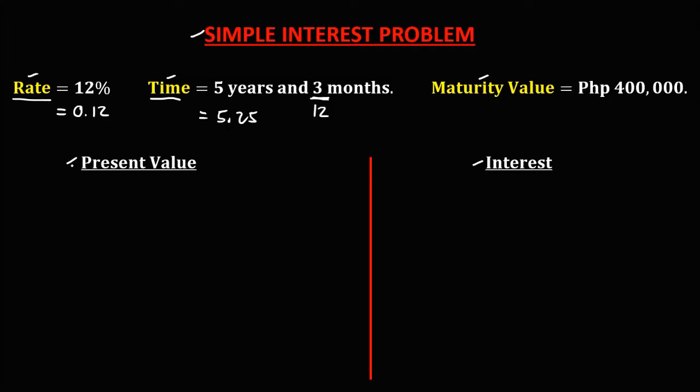Then to solve for the present value using the maturity value, that's P equals the maturity value over the rate times the time plus 1.